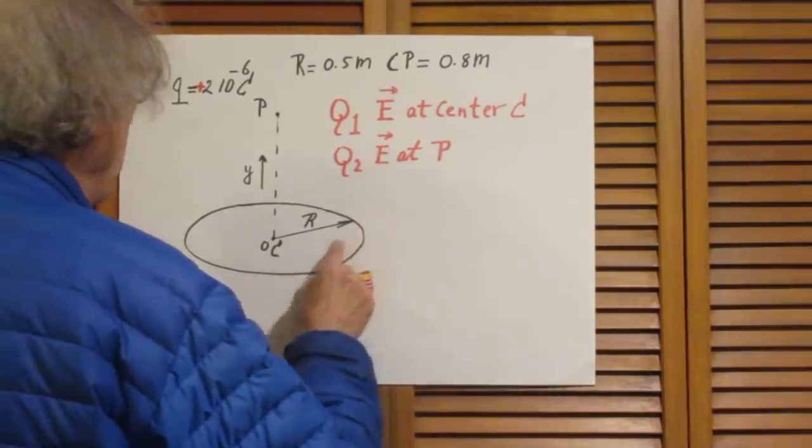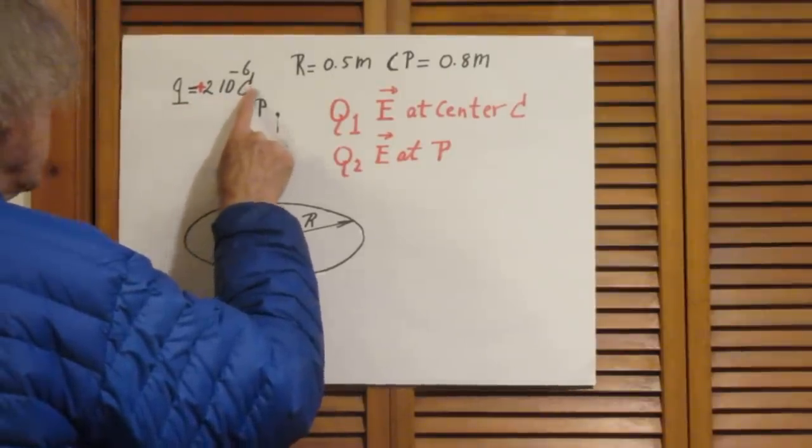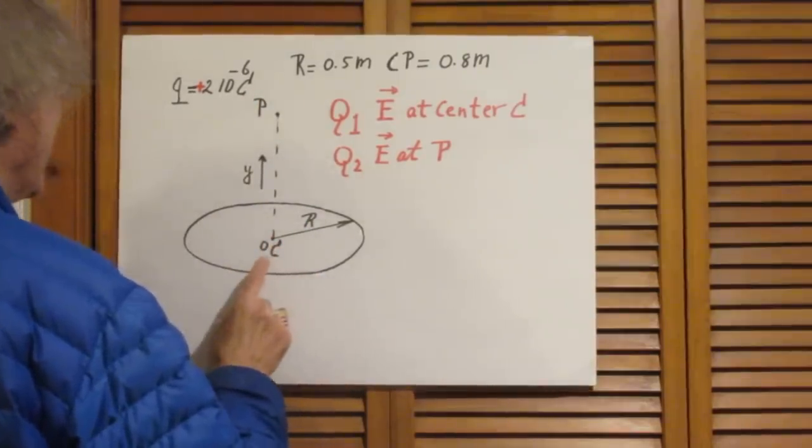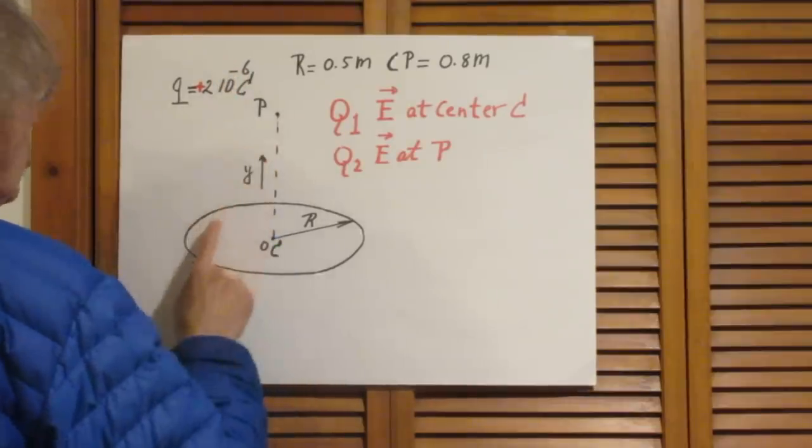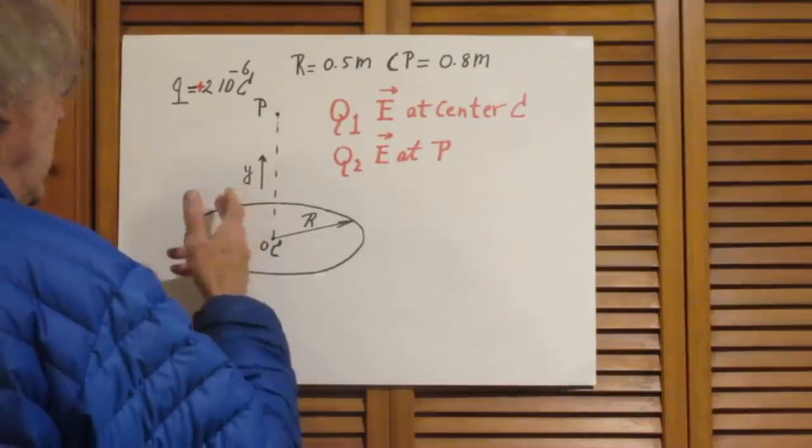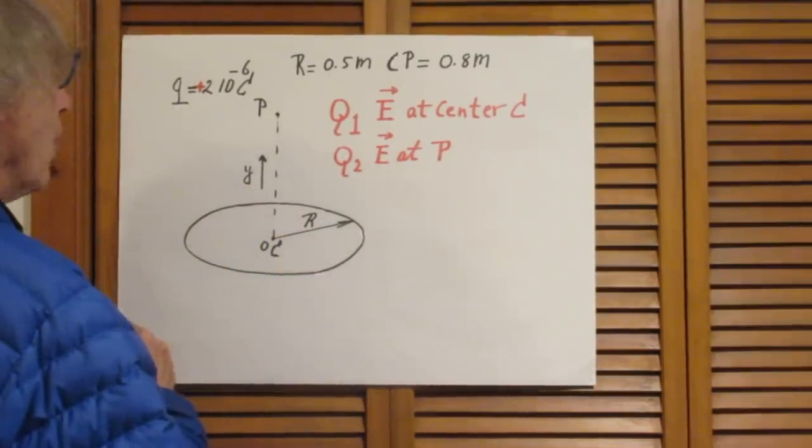I put a charge q of 2 microcoulombs—this C is coulombs, don't confuse it with the center. I put a charge of plus 2 microcoulombs on the conductor, and since it is a conductor, it will automatically uniformly distribute itself around the circle.